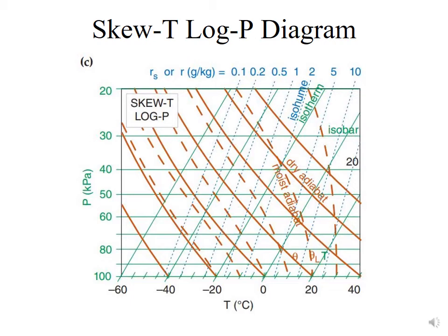Such a diagram has pressure plotted on the vertical axis with a logarithmic scale, and that's where the name, the Log-P part of the Skew-T Log-P, comes from.